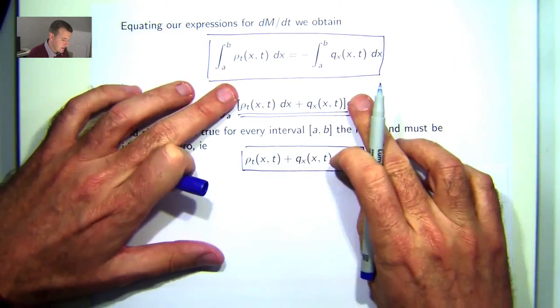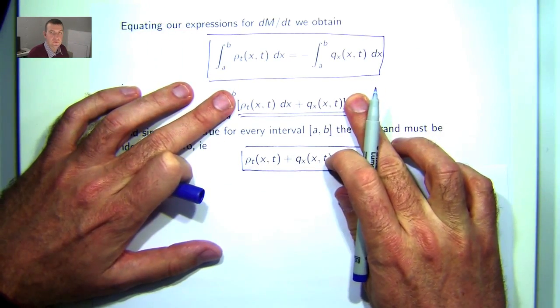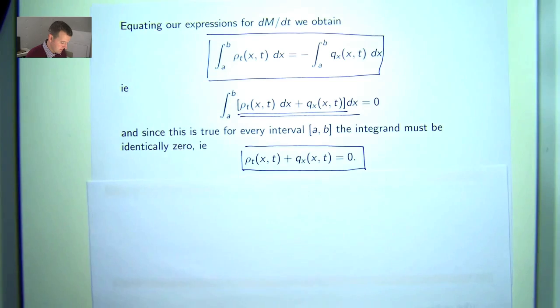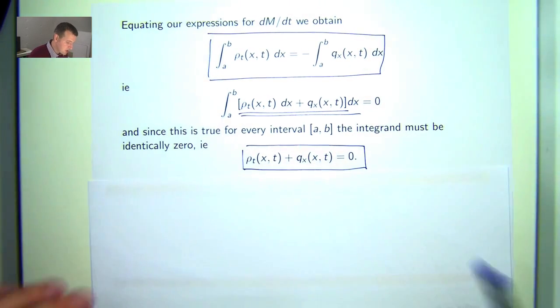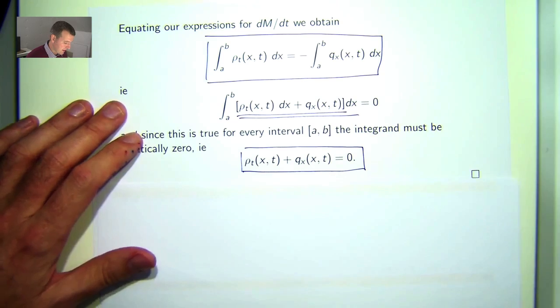Now, the only way that can happen is if the integrand is zero. So I can move from here to here and just say the integrand is zero. So this is the general form of the transport equation.